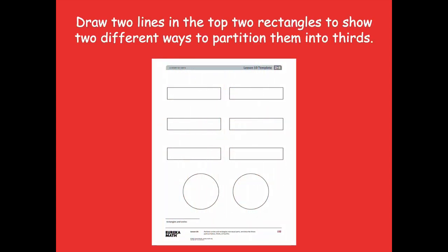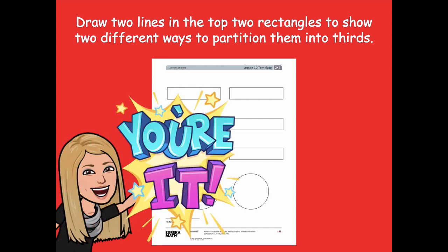Grab your lesson template and draw two lines in the top two rectangles that show two different ways to partition them into thirds. Pause the video — just those top two rectangles — draw two lines to partition them into thirds, and then click play when you're ready to go over it together.